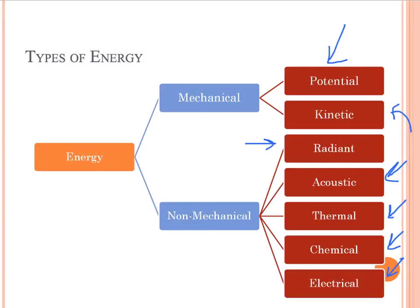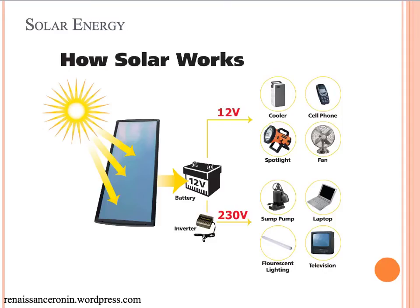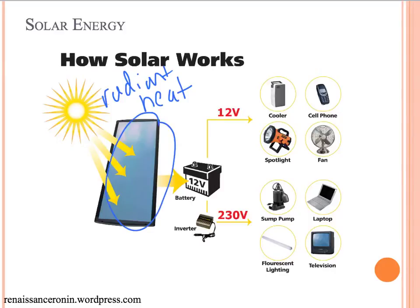Using these types of energies, let's talk about some common ways that energy gets converted. The first one we should talk about is solar energy. Solar energy takes radiant and thermal energy from the sun — two of the types we've talked about — and directs them onto, for example, the solar panels on the roof of a house.